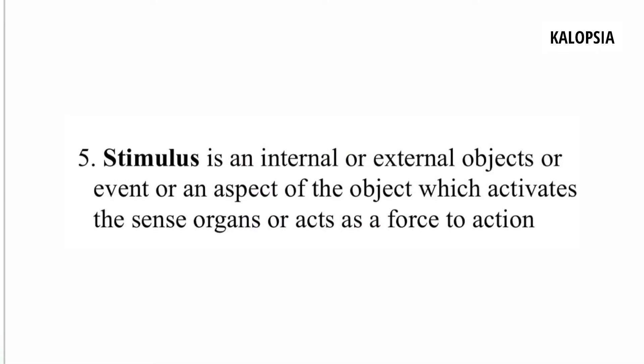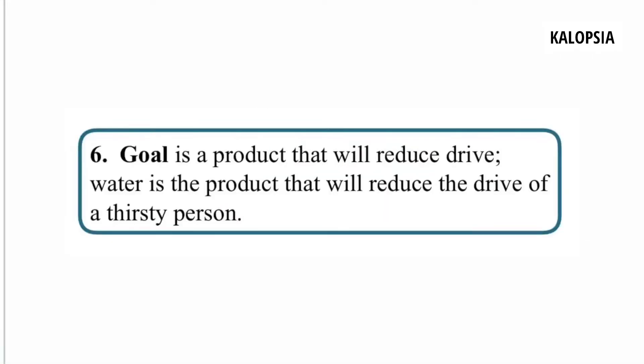The fifth source is stimulus. Stimulus is an external or internal object, event, or aspect of an object which activates the sense organs or acts as a force to action. The sixth and last source is goal. Goal is a product that will reduce drive — for example, water is a goal that will reduce the drive of a thirsty person. These are the six sources of motivation.